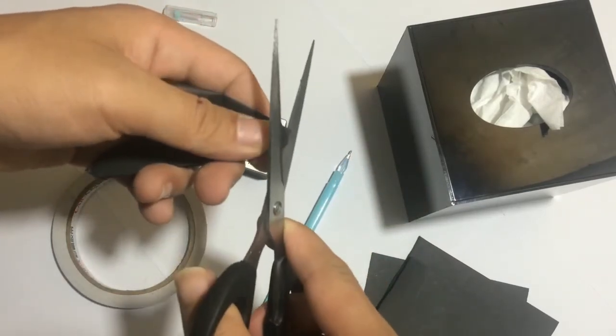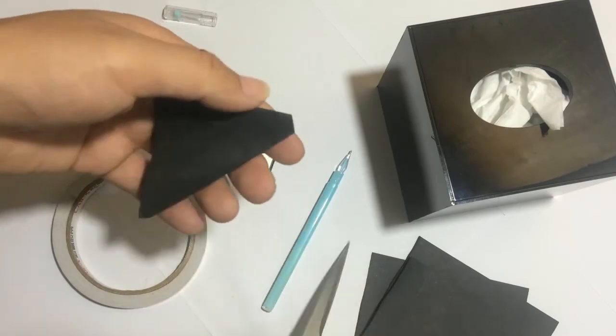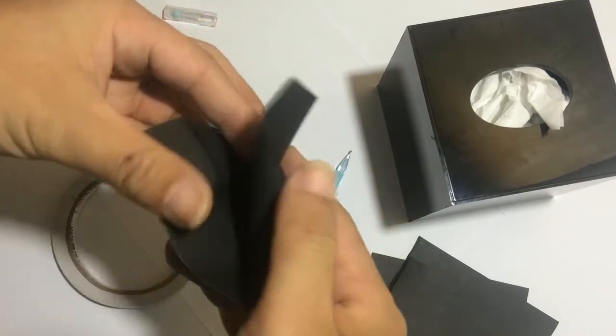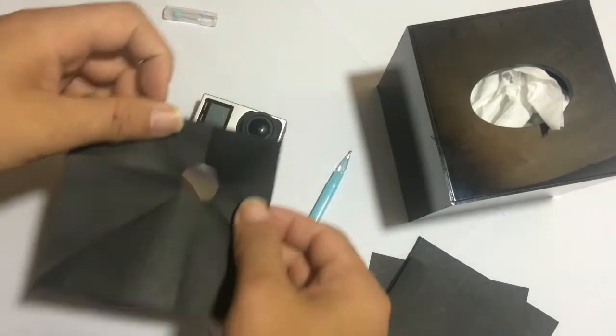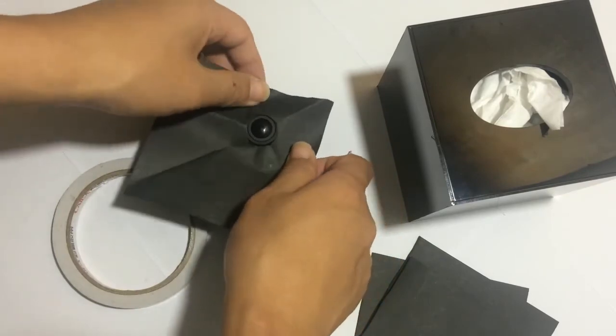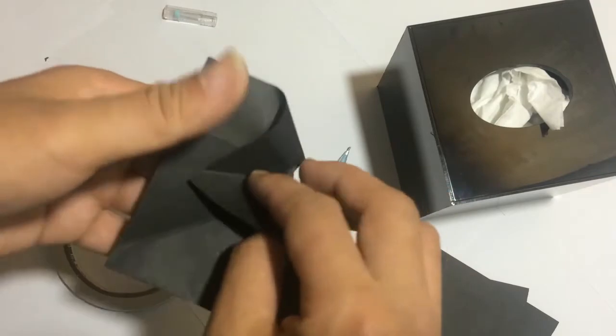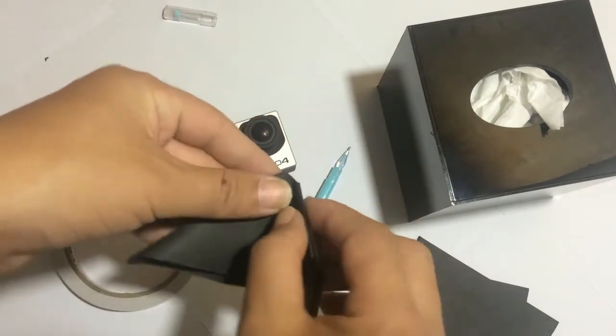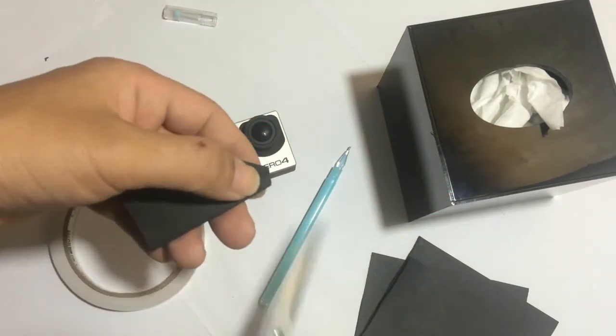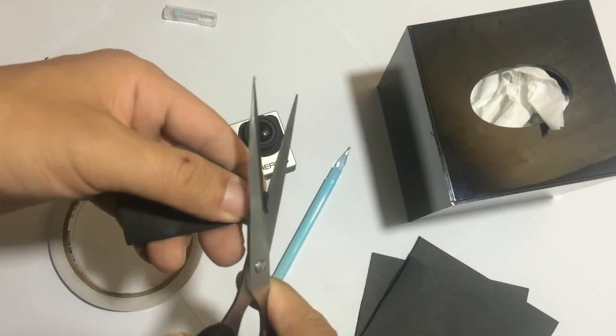You should keep trimming and keep adjusting until the perfect circle size appears. To do this process, you need to be patient.